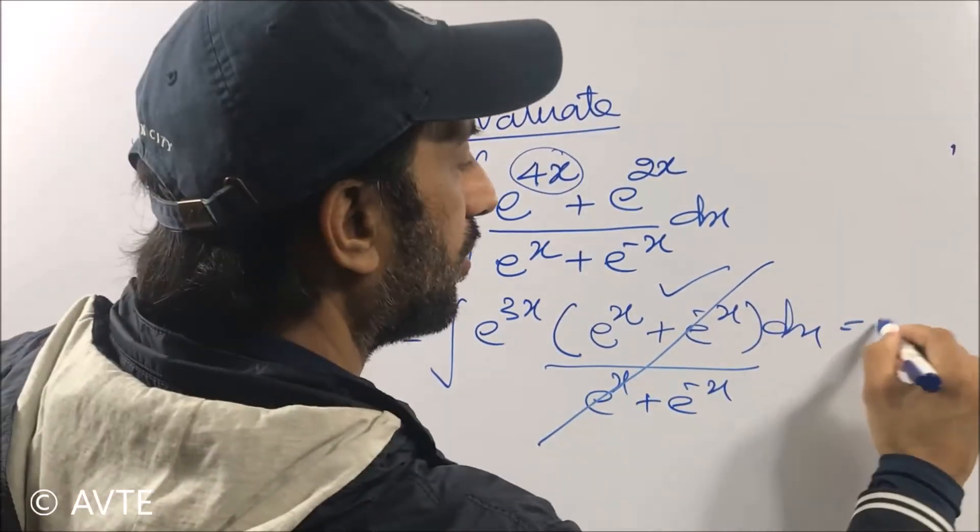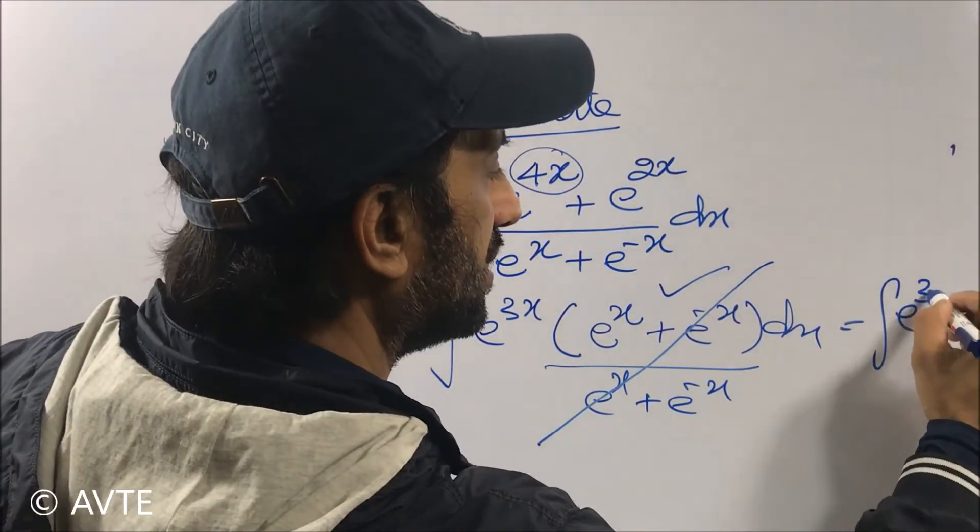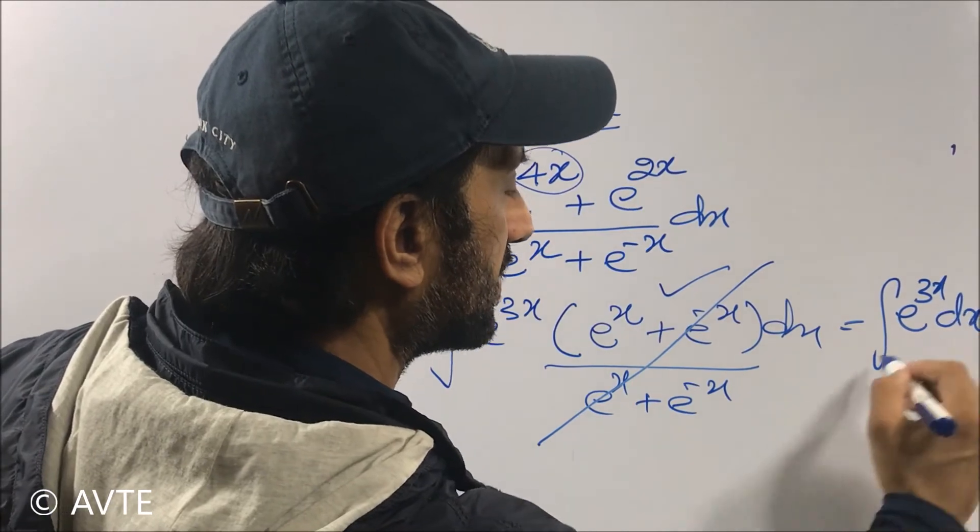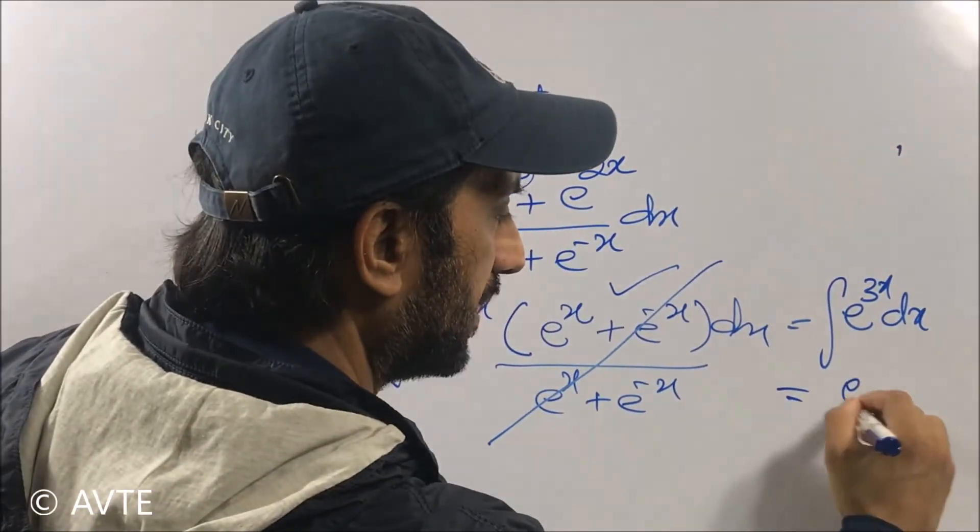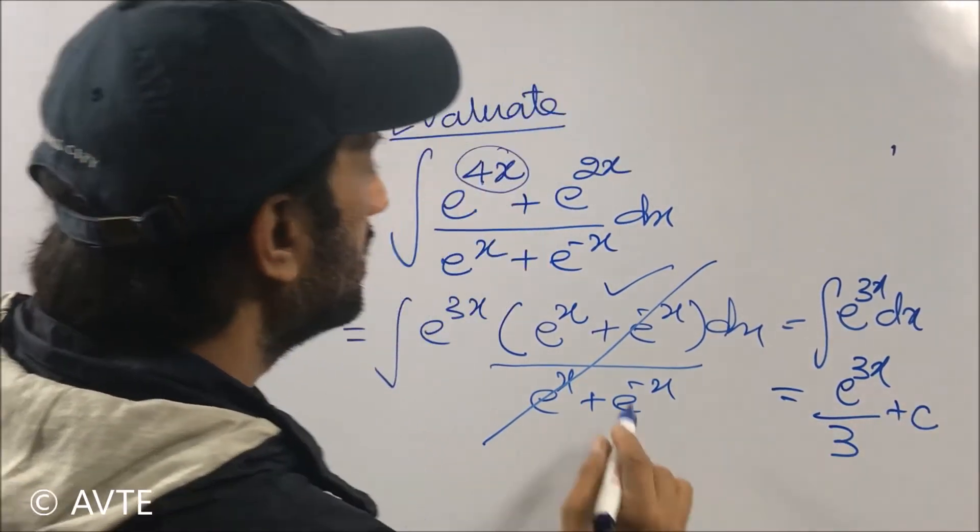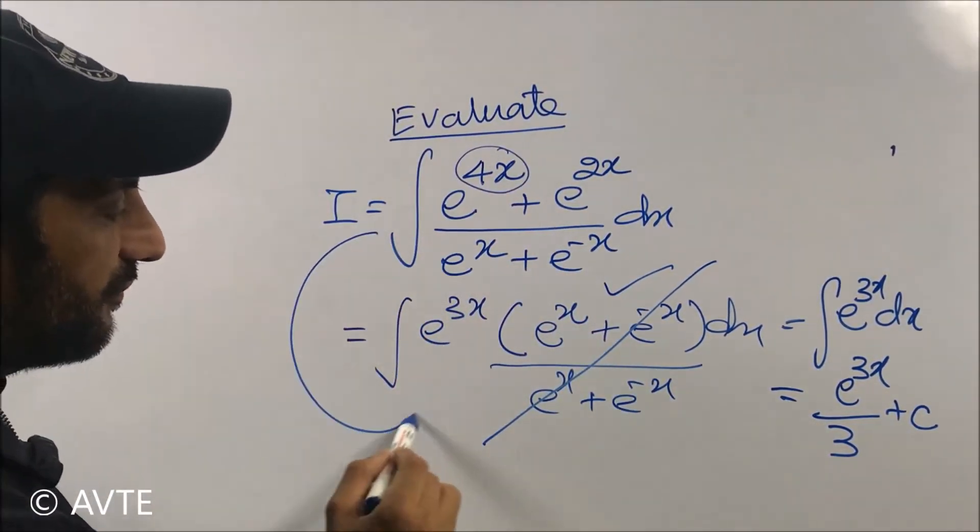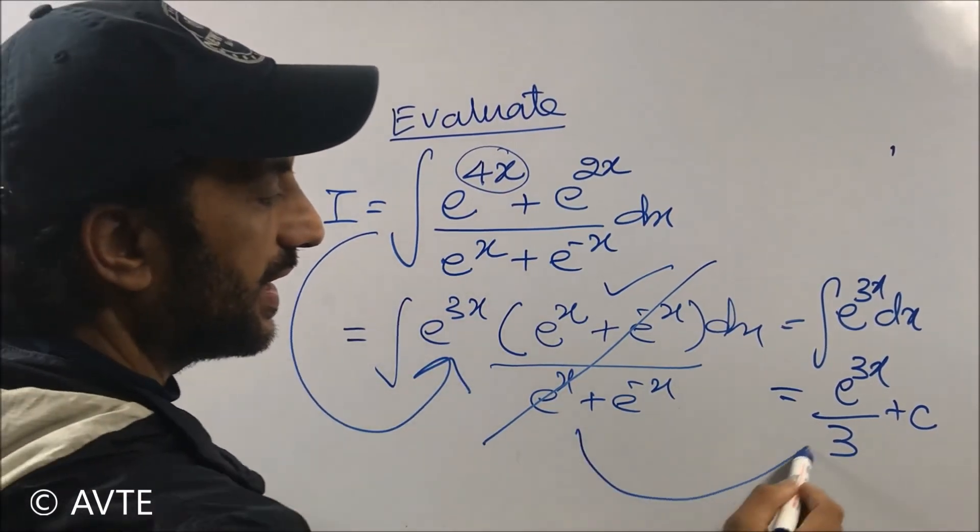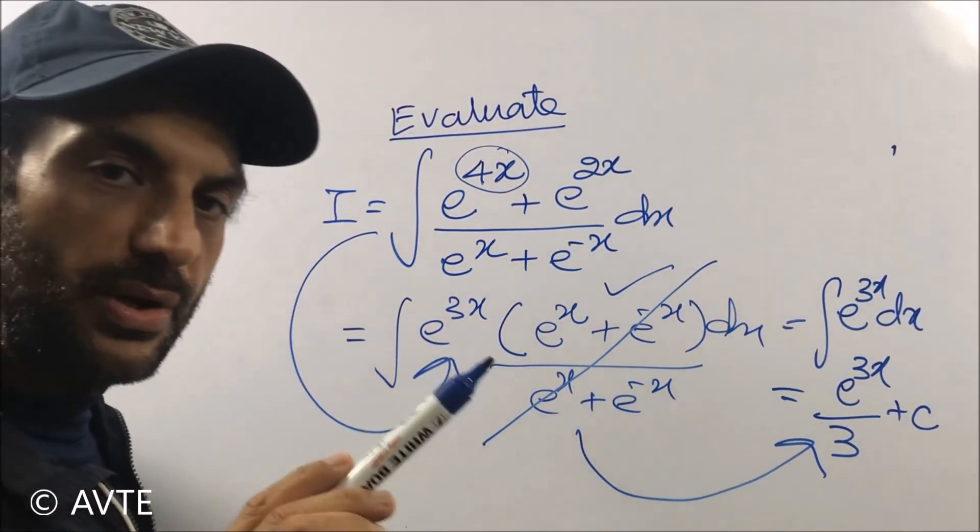So the integration will be e^(3x)/3 + c. So this question is more about finding the approach and then doing it. Thank you very much.